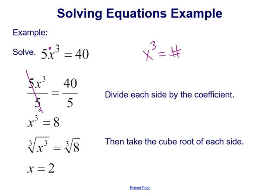When we divide by both sides on the left, that achieves our goal of getting x cubed by itself. And now 40 divided by 5 is 8. So we get x cubed equals 8. So now we can take the cube root of each side, giving us that our answer is x equals 2.